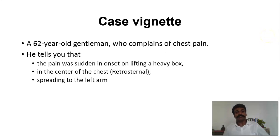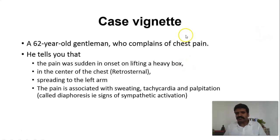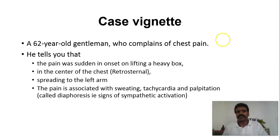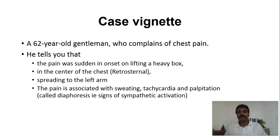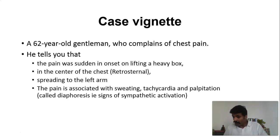He said the pain was spreading to the left arm around the ulnar border. It was associated with sweating and palpitation — we could see that he had tachycardia — and this is what we usually put together and call diaphoresis. So this elderly gentleman came to us with a sudden onset chest pain radiating to the left arm, present in the retrosternal area, associated with diaphoresis, and present for the last one hour.